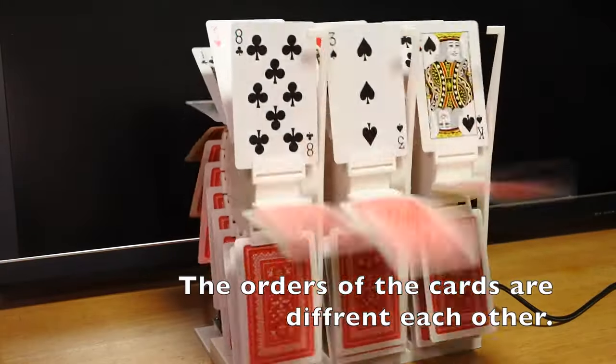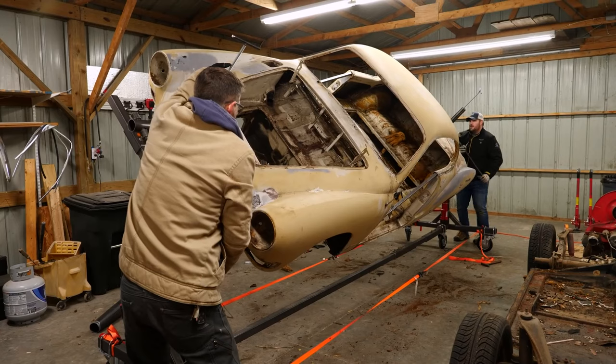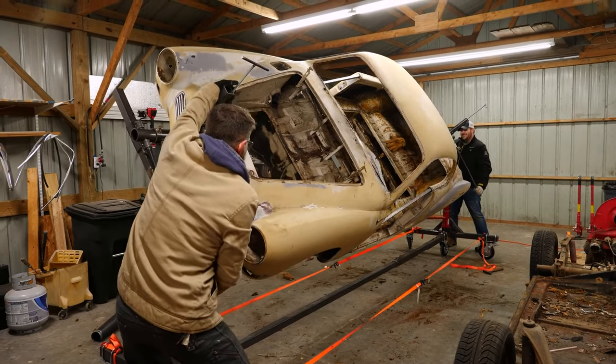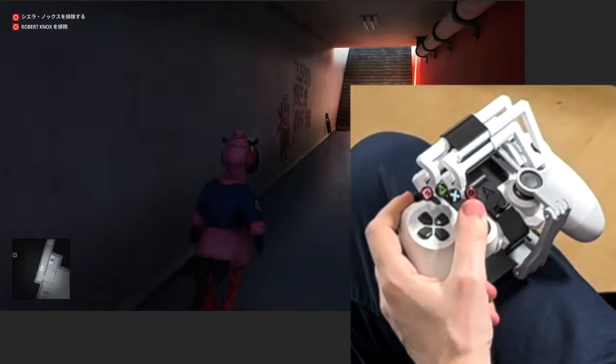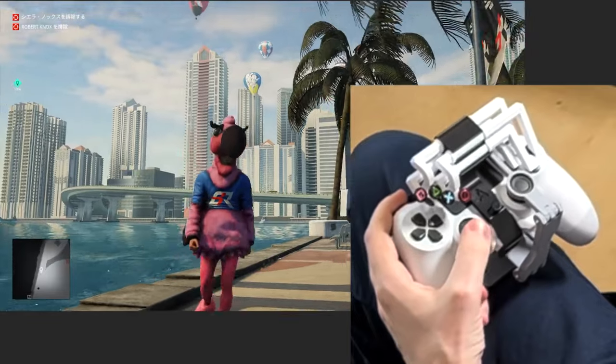This week on Maker Update: a split flap for one-eyed jacks, a rotisserie for your car, Jimmy DiResta's return to television, puzzle boxes, sugar printers, and a leg-mounted DualShock for accessible gaming.